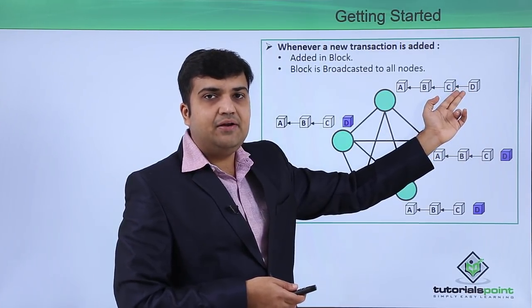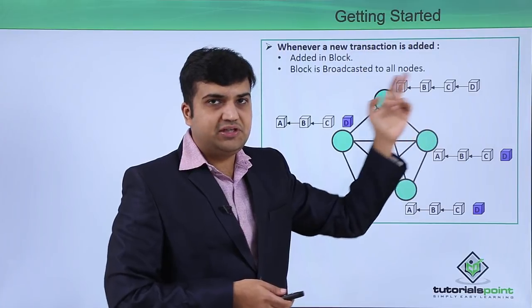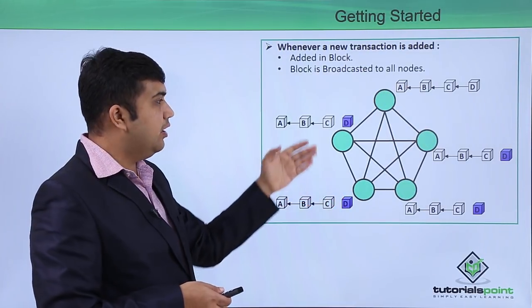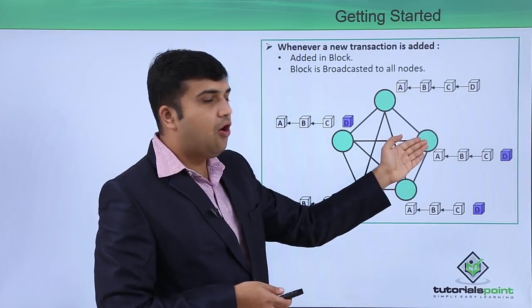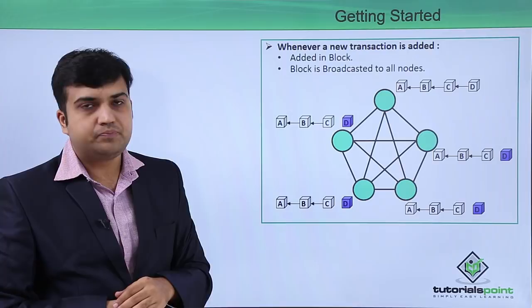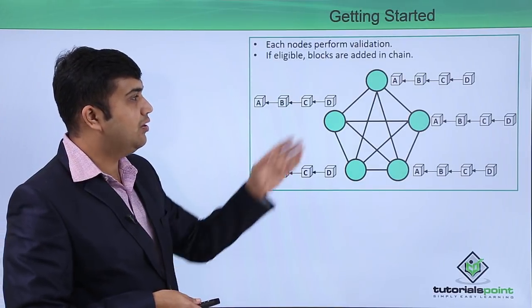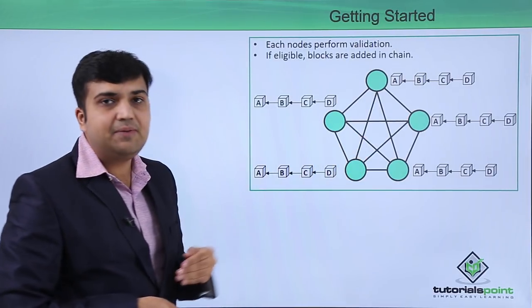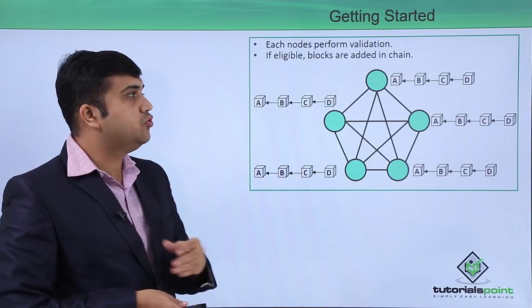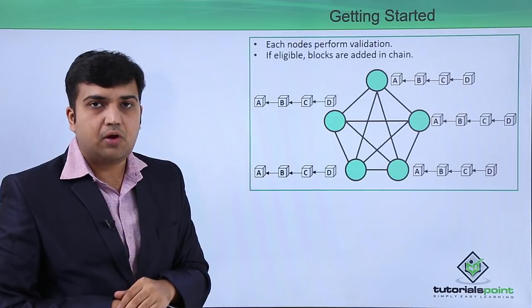For example, let's say this node has validated block D and added it to its copy of the blockchain. Now this block D will be broadcasted across all the nodes, and all these nodes are responsible to validate the block. Once all the nodes receive the broadcasted block and validate it, it will be added to their copy of the blockchain.